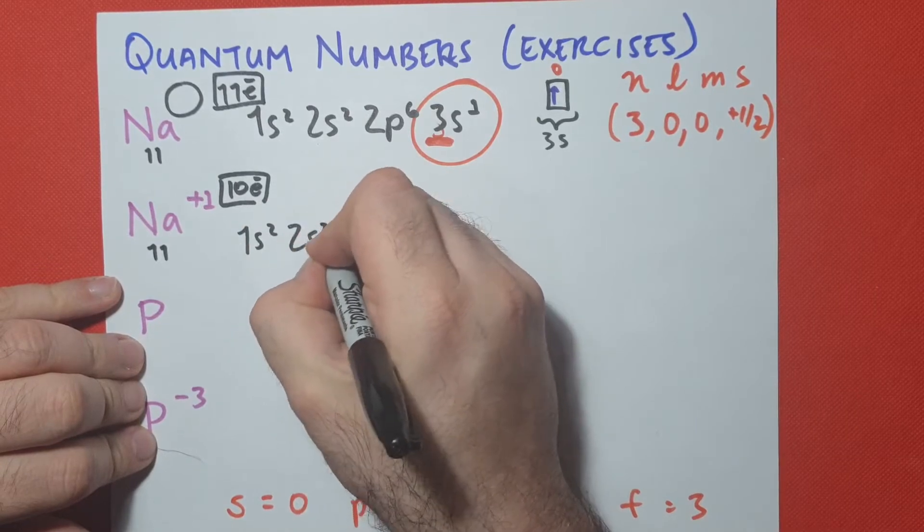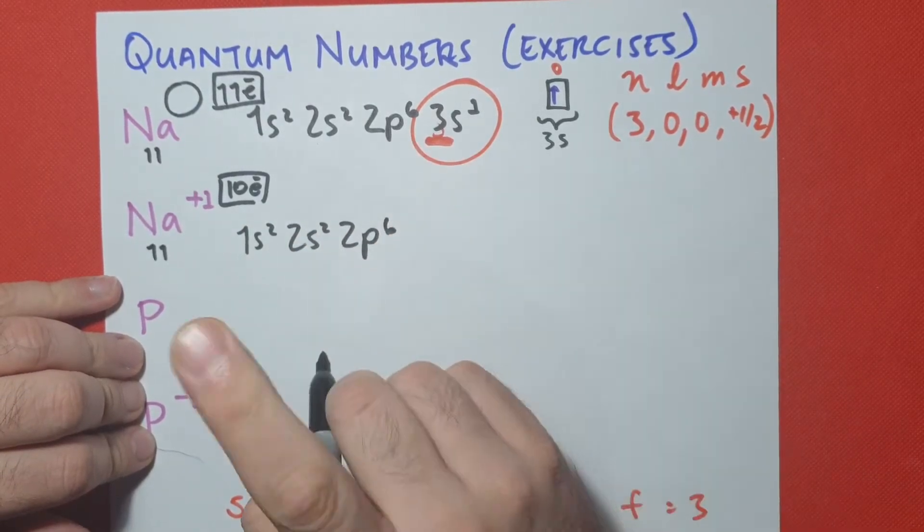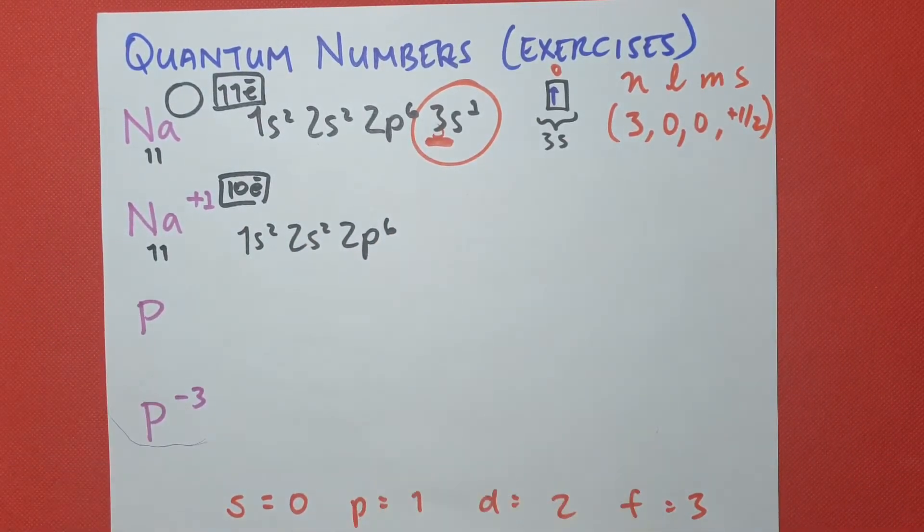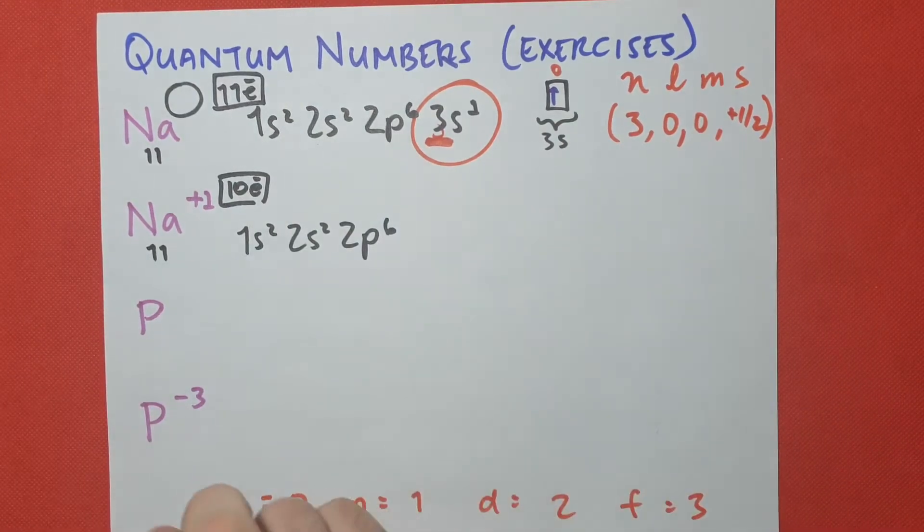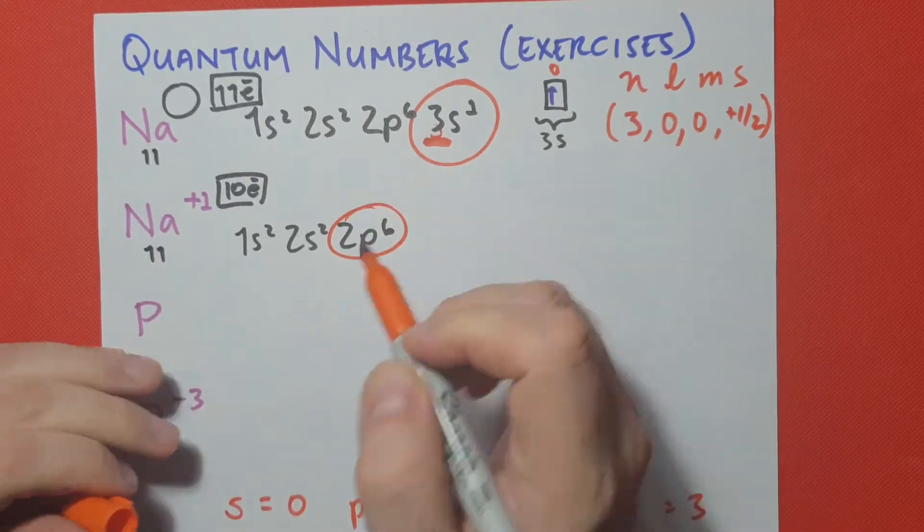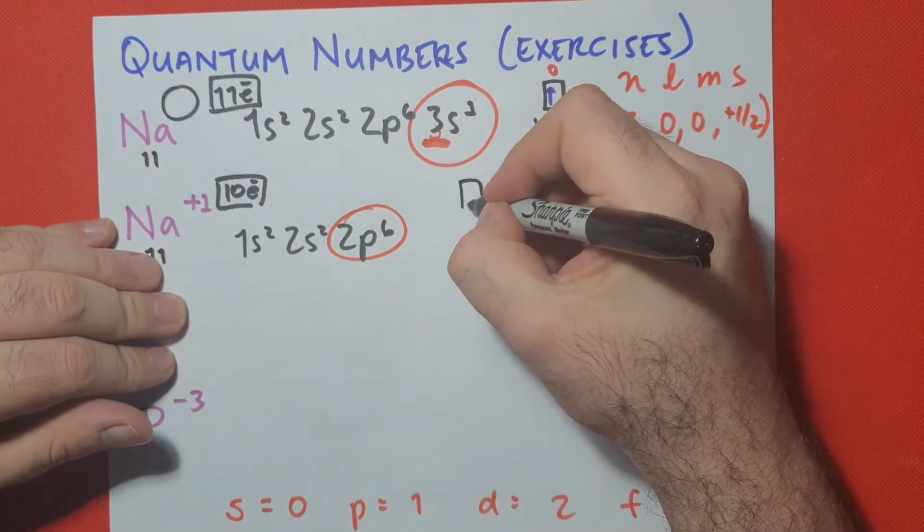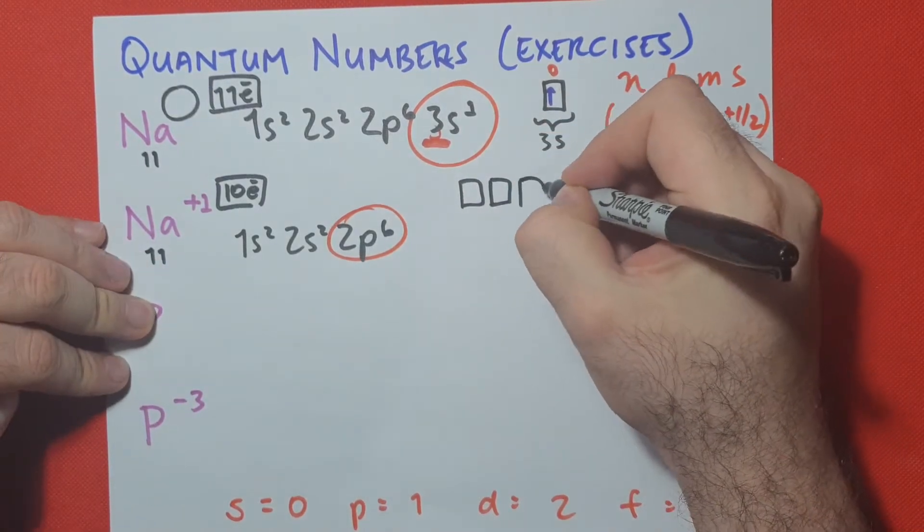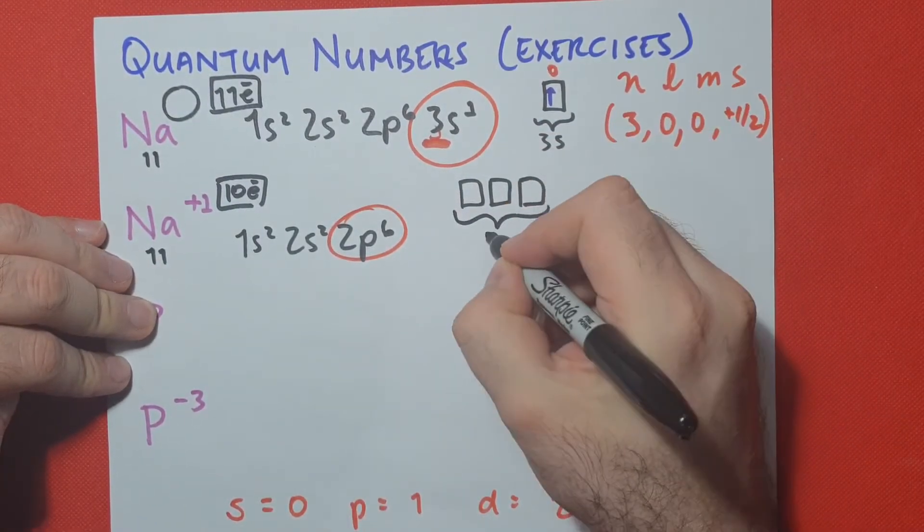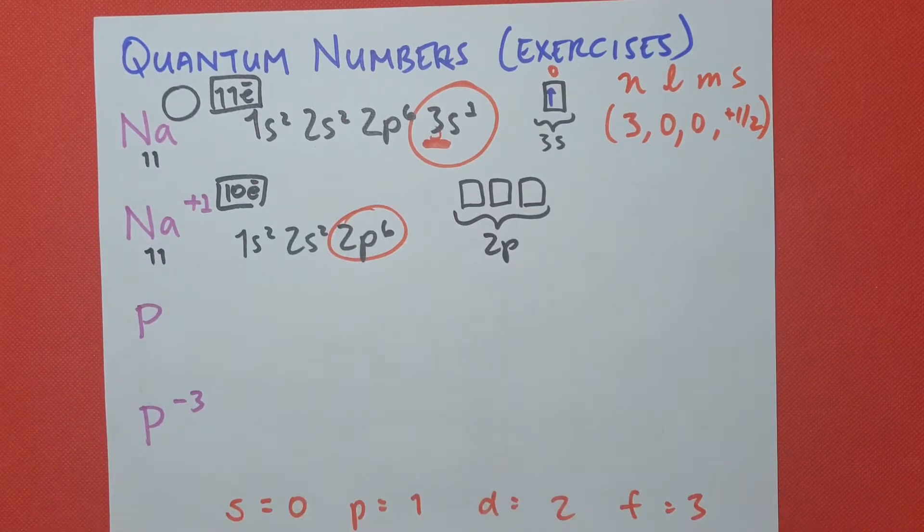1s2, 2s2, 2p6, so the same as neon. So let's look at that last orbital that was filled, and that last orbital that was filled is p. So we draw three little boxes because those are our orientations for p orbital, and then these are called 2p, but 2p has all its boxes filled up.